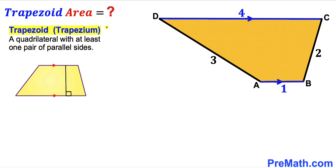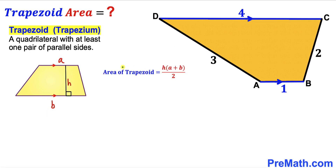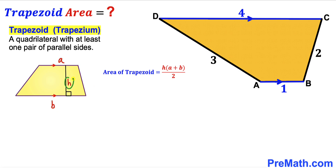Let's recall the definition of a trapezoid — sometimes called a trapezium. It is a quadrilateral with at least one pair of parallel sides, as you can see in this diagram. This is our trapezoid since these two sides are parallel to each other. Now let's recall the area of a trapezoid formula: Area = height h times (base a + base b) all over 2.